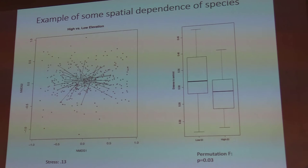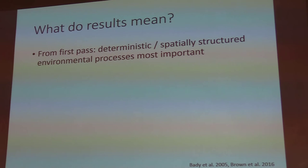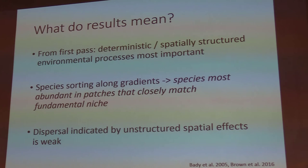Diving deeper into those results: on the left is an NMDS ordination of sites in low versus high elevation areas, and a permutation F-test on the PCoA shows a significant difference. Environmental variables are clearly important in dictating the patterns we're seeing. Spatially structured environmental processes appear most important in this preliminary pass, suggesting species sorting may explain some of the variation, while unstructured spatial effects seem weak.